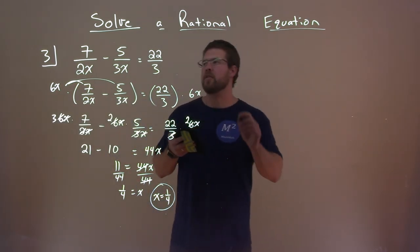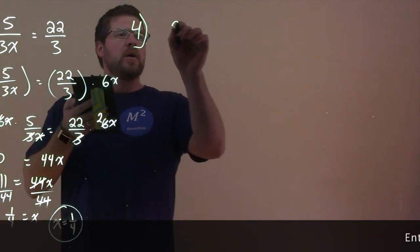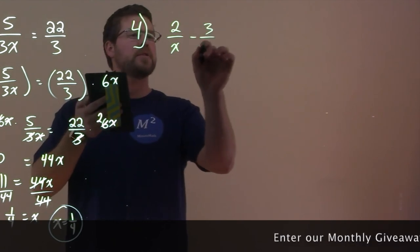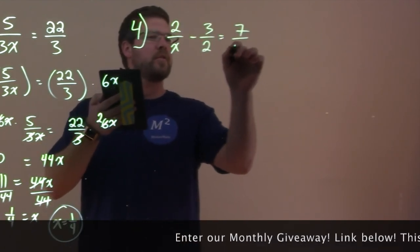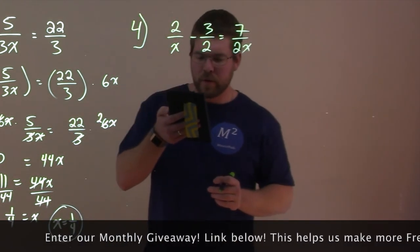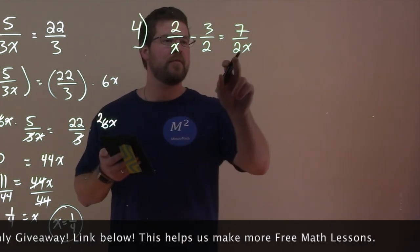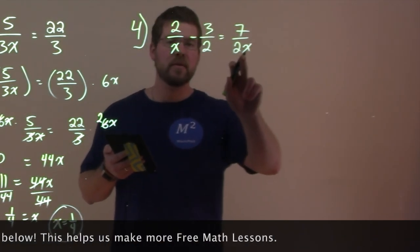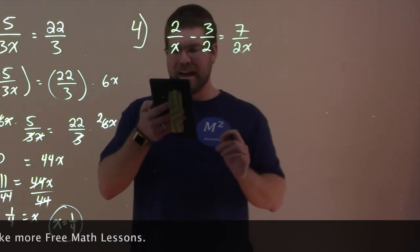Let's solve another example: 2 over x minus 3 over 2 equals 7 over 2x. Again, we want to find the LCD for our denominators. Seeing x, 2, and 2x, the LCD is 2x.